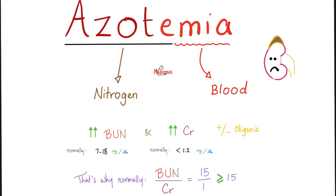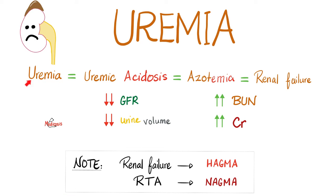So there is too much urea and too much creatinine in the blood, and urine volume is low. When you have tons of urea in the blood, that's uremia. Since urea has nitrogen in it and the word for nitrogen is azote, we can call this azotemia — too much nitrogenous waste products in the blood. In chronic kidney failure, there is uremia; you can call it uremic acidosis, azotemia, renal failure, or renal insufficiency.